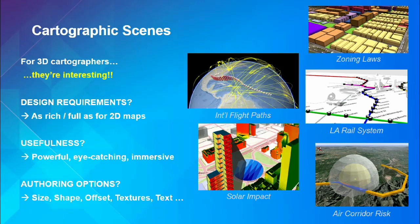For example, here we've got international flight paths — not actual lights, but balls of light showing where the flight paths are: a cool, interesting, and informative way of sharing information in 3D. Same with the solar impact example below it: the buildings are colored by how much solar potential they have — how much sun shines on them in a day — and we can see how much shadow is being cast down on the little park at the bottom. We're adding useful information into the view.